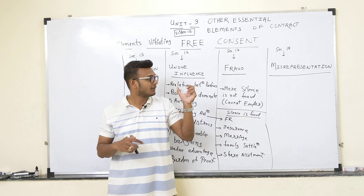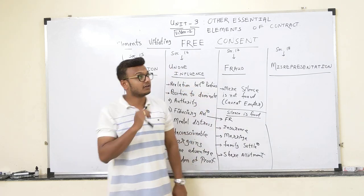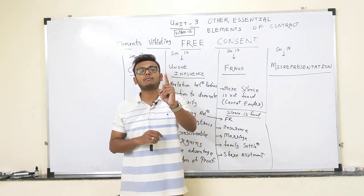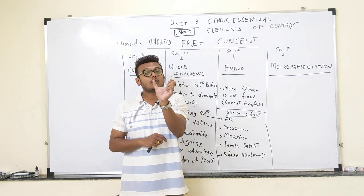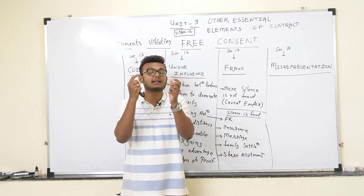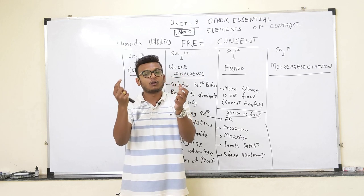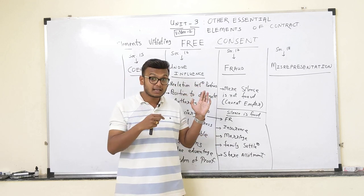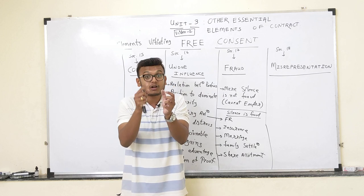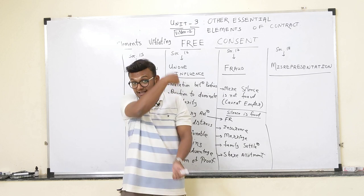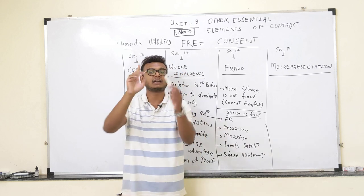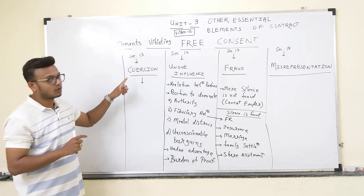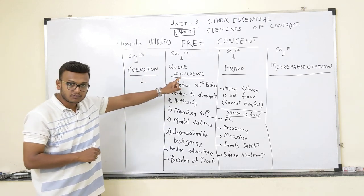We have to complete this video on free consent. Section number 10 requires free consent from both parties — consent meaning approval. We need both parties' approval for the contract to be complete. Sections 15, 16, 17, and 18 deal with coercion, undue influence, fraud, and misrepresentation respectively — cases where free consent is vitiated.